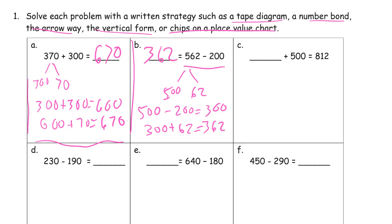And now we've got a missing addend here. So we can solve this by subtraction, or we can solve it using the arrow way. What do we need to add to 500? We can do it this way. 500 plus 100, 600, plus another 100, 700, plus another 100. That gets us to 800. And now we still need 12 more.